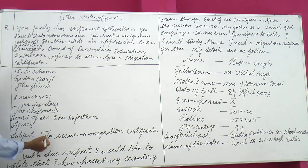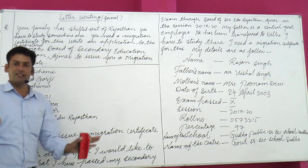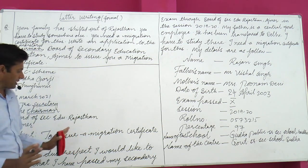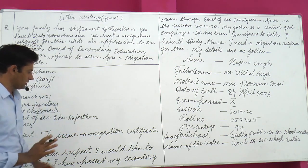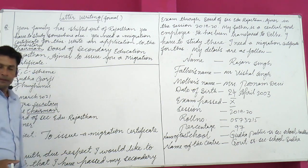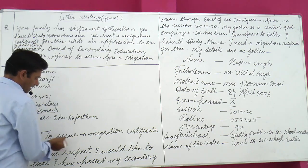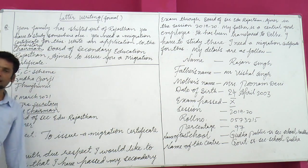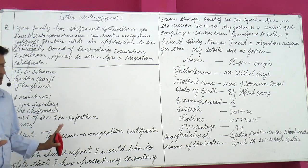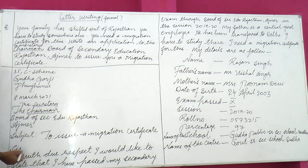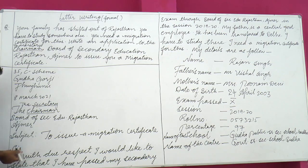Then write the subject line. The subject is generally a short phrase in capital letters. Subject: To issue a Migration Certificate. After 'Sir,' you can put a comma and start writing, or skip the comma — both are acceptable. The older pattern uses 'Sir,' with a comma, then begin the body below with a capital letter, leaving a small space.